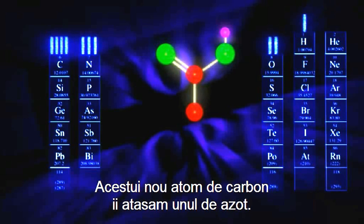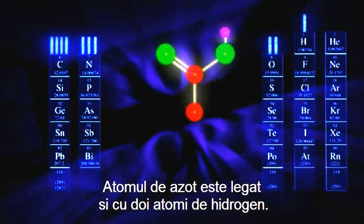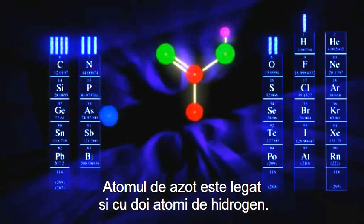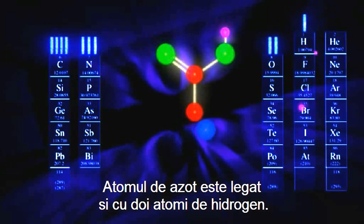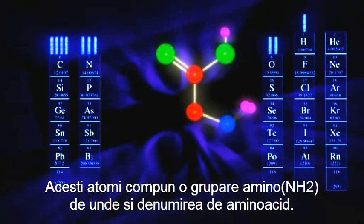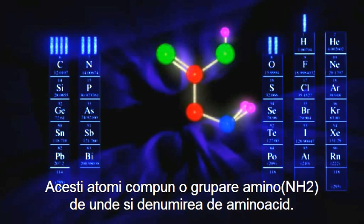And let's give this new carbon atom a bond to a nitrogen atom that is also attached to two hydrogen atoms. This is called an amino group, and is where amino acids get their name.